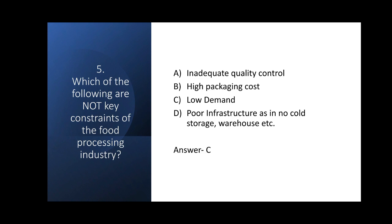Various barriers or limitations exist at different levels — the farm level, production level, manufacturing level, distribution level, and consumer level. At every level of the supply chain there are certain limitations, all of which are illustrated here.